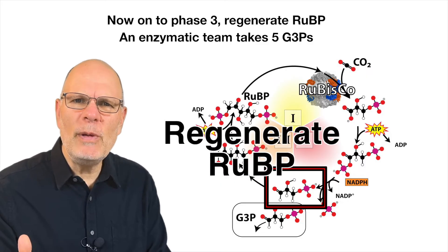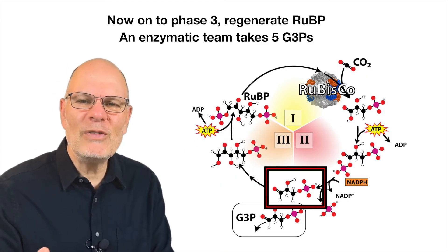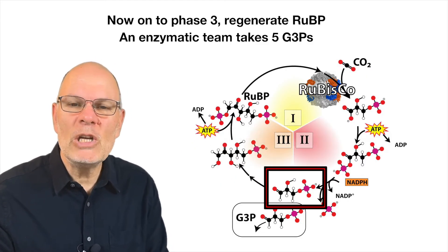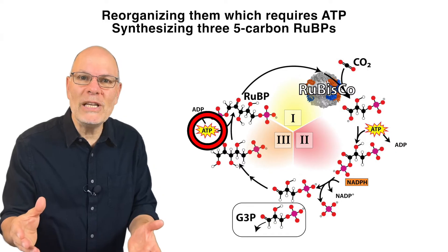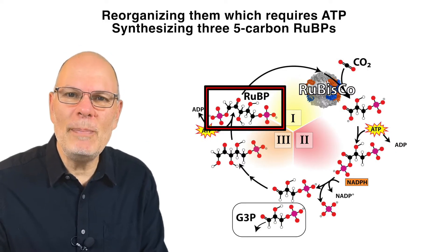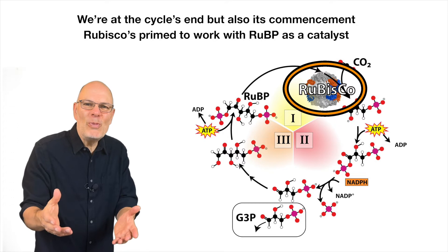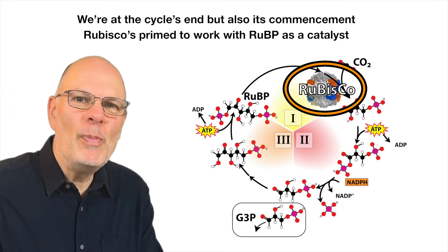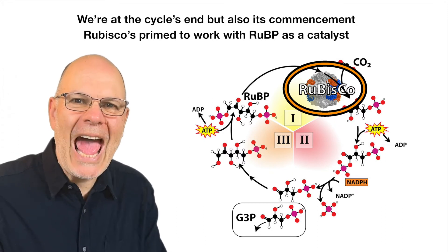Now onto Phase 3: regenerate R-U-B-P. An enzymatic team takes five G3Ps, reorganizing them, which requires ATP, synthesizing three 5-carbon R-U-B-Ps. We're at the cycle's end, but also it's commencement — Rubisco's primed to work with R-U-B-P as a catalyst.